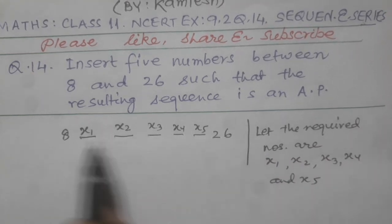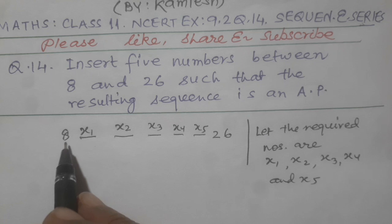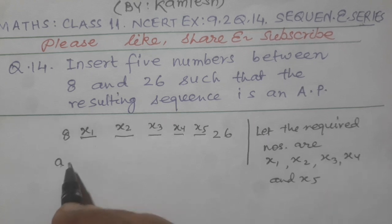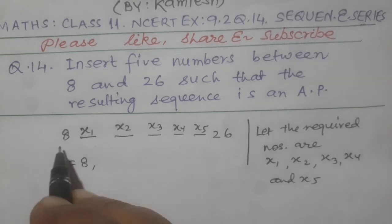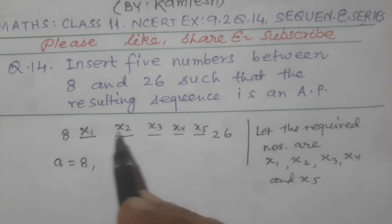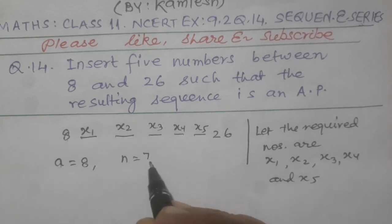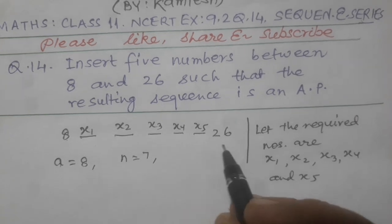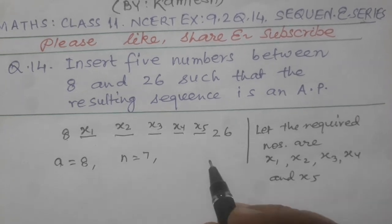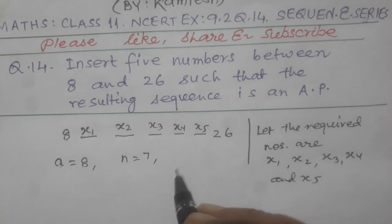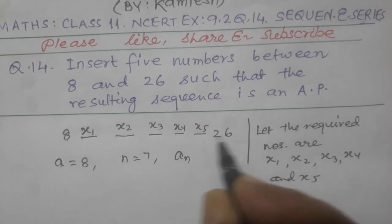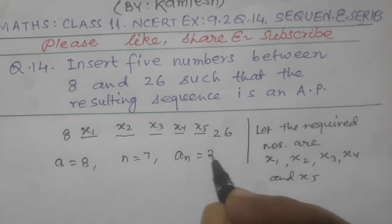So by looking this sequence, first term a is equal to 8. Number of terms 1, 2, 3, 4, 5, 6, 7. So n equal to 7 and the value of nth term, meaning An, value of nth term is equal to 26.